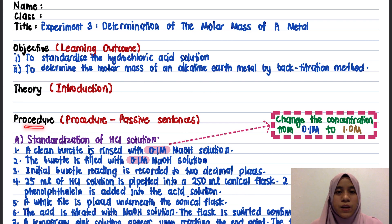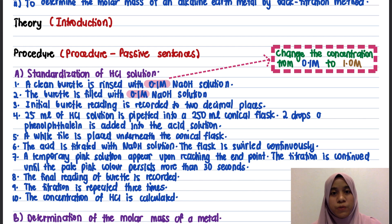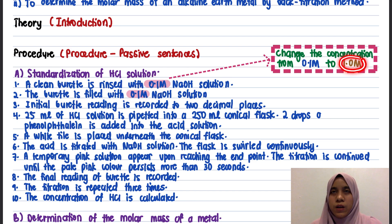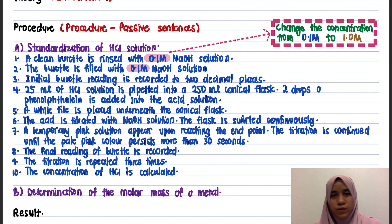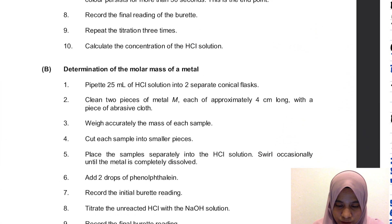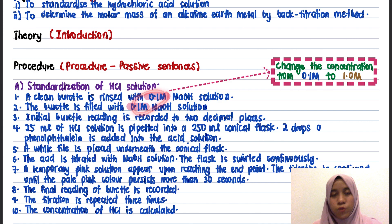Next is your procedure. Make sure you change the sentences into passive voice. This experiment has two parts: Part A and Part B. Part A is similar to Part B from your previous experiment. Importantly, please change the concentration — in your lab manual it mentions 0.1 molar, but what we are actually going to use is 1.0 molar of sodium hydroxide. For Part B, there is no mention of concentration, so nothing needs to be changed there.